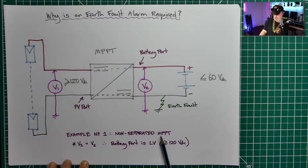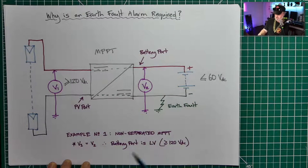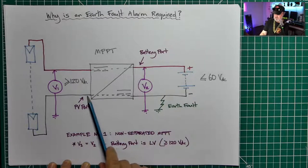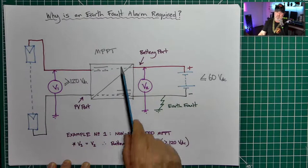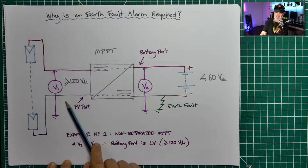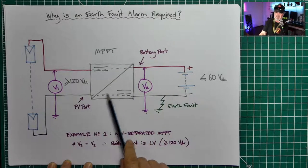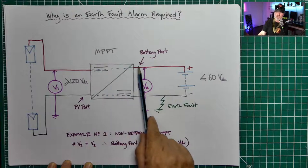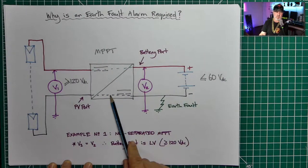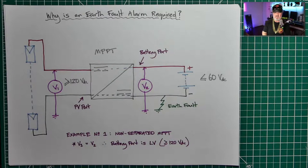A non-separated MPPT is one that has no galvanic separation. It may be that one or other of the poles are connected directly through — so the negative conductor might be passed through uninterrupted, or the positive conductor passed through uninterrupted. When it's operating, it's switching electronics doing the conversion — it's not actually providing galvanic isolation.